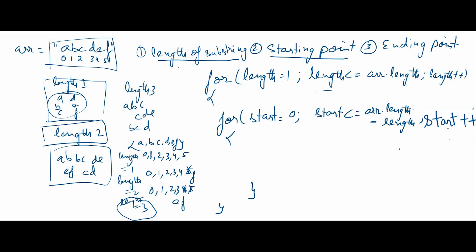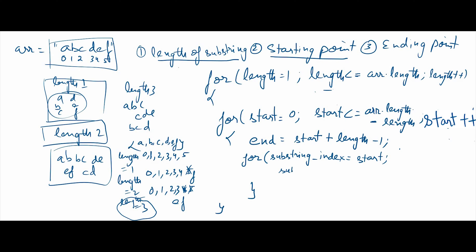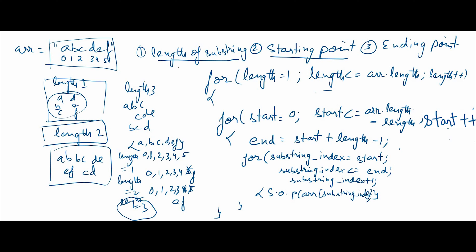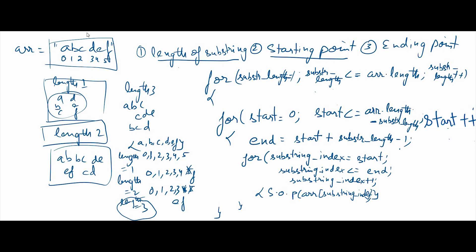Now let's calculate the ending point. End equals start plus substring length minus one — the minus one is because array indices start from zero, so a length-five substring ends at index four. The third loop is: for substring index equals start; substring index less than or equal to end; substring index++. Inside this loop, print array[substring_index]. I'll rename the variable to substring_length for clarity.